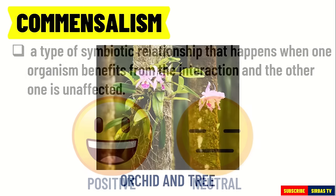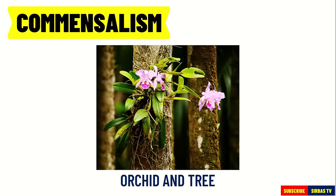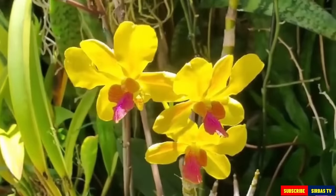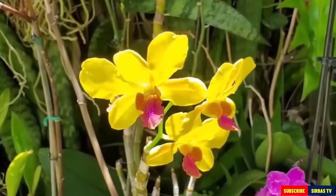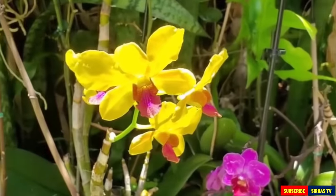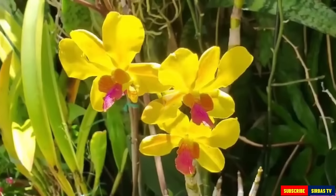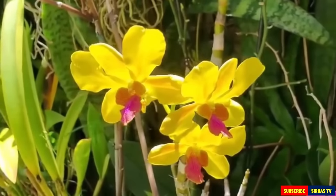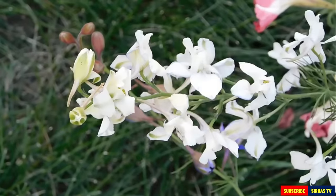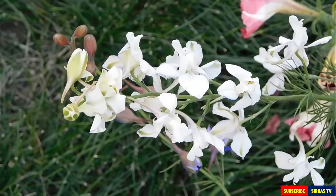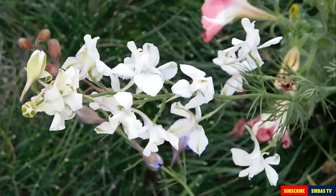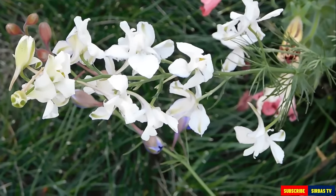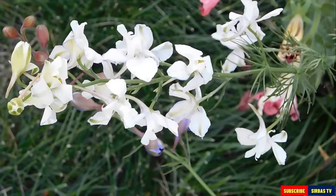An example of this is the interaction of an orchid plant and a tree. The orchid attaches itself to a tree without harming it. The tree provides a place for the orchid to live, and the orchid also benefits by getting adequate sunlight. The orchid depends on the tree for mechanical support but not for nutrients; hence, the tree is not affected.